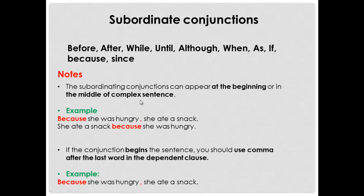Note: the subordinating conjunction can appear at the beginning or in the middle of a complex sentence. Example: 'Because she was hungry, she ate a snack' — here it's at the beginning. Second: 'She ate a snack because she was hungry' — here it's in the middle. Subordinating conjunctions can come at the beginning or in the middle of any complex sentence.